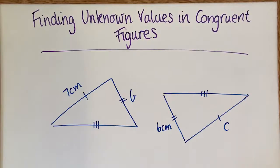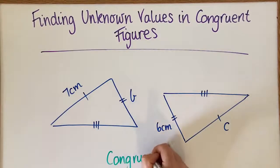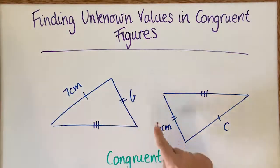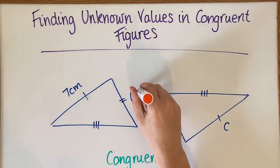OK, so for this one, again, you'll be told if they're congruent or not. So you're being told that these are congruent triangles. So we need to decide what goes together.